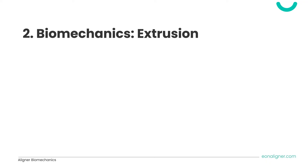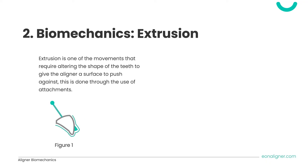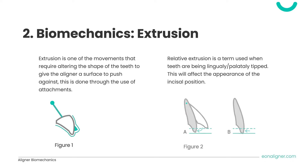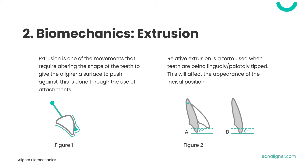Moving on to biomechanics of extrusion. Extrusion is one of the movements that requires altering the shape of the teeth through the use of attachments, as shown in Figure 1. Adding an attachment on the incisors gives the aligner a surface to push against. Relative extrusion occurs when teeth are lingually or palatally tipped, affecting the incisal position. Correcting a proclined tooth will result in relatively extruding that tooth. Tooth A in Figure 2 is relatively extruded when tipped lingually, while B represents absolute vertical extrusion.